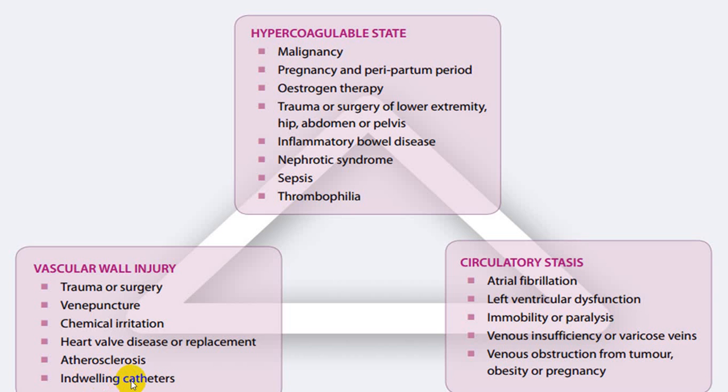Indwelling catheters — particularly in venous sites — can produce venous thrombosis: central venous lines, catheters for TPN, pacemaker wires, ICD wires, and catheter wires can all lead to venous thrombosis. During ABG collection, damage to the arterial wall can produce arterial thrombus formation.